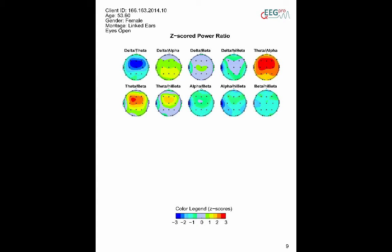The power ratio analysis shows the z-scores for the most common power ratios. Both the relative power analysis and the power ratio analysis are derivatives of the absolute power analysis. It is unadvisable to use these analyses as a basis for your hypothesis without looking at the absolute power analysis first.